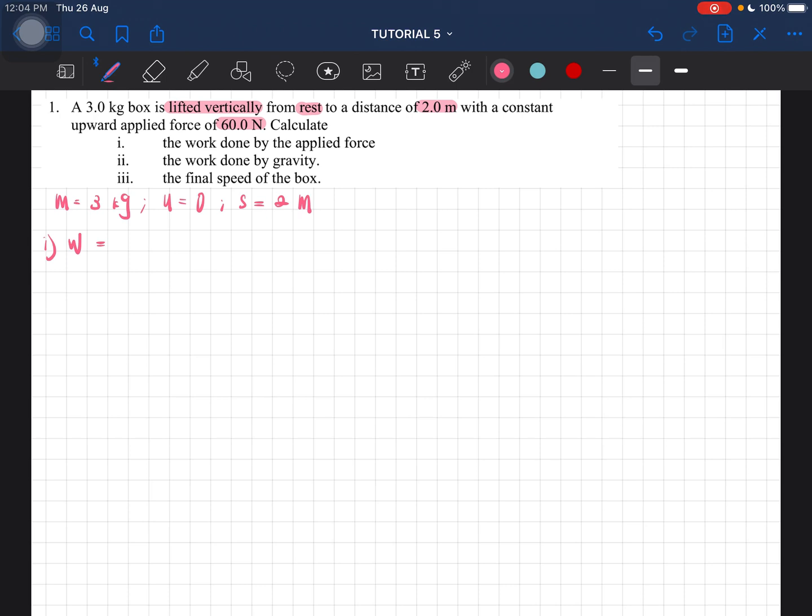So this is our box, and then there's an upward force of 60 newtons. It is lifted vertically, so the displacement is somewhere there, so s is equal to 2 meters here. We can then use the formula work done for applied force as F times s times cos theta.